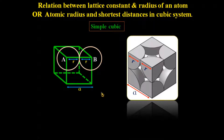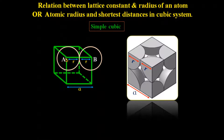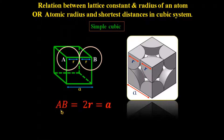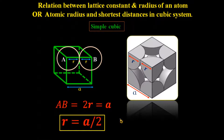If r is the radius of each sphere, then the blue arrow represents the radius of sphere B and another blue arrow represents the radius of sphere A. The sum of the lengths of these blue arrows equals a, the edge length of the cube. So the relation is: AB = r + r = 2r = a, or r = a/2. This is the relation between r and a for the simple cubic system.